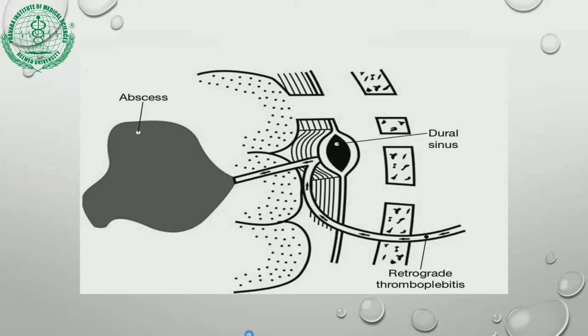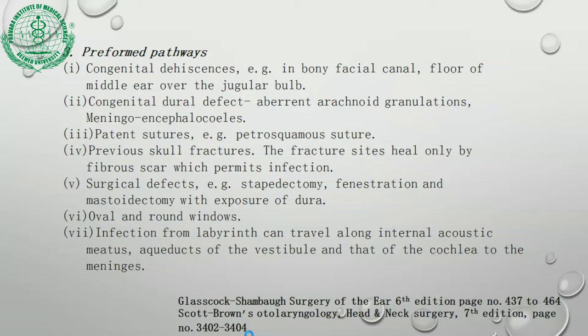The dura is interconnected to the dural veins and cortical veins. Preformed pathways include: congenital dehiscence in the facial canal or floor of the middle ear over the jugular bulb; congenital dural defects; aberrant arachnoid granulations or meningeal cells; patent sutures such as petrosquamous sutures; previous skull fractures that heal only by fibrous scar; surgical defects such as stapedectomy, fenestration operation, or mastoidectomy with dura exposure; and the oval and round windows, through which infection from the labyrinth can travel along the internal auditory meatus or aqueducts to the meninges.